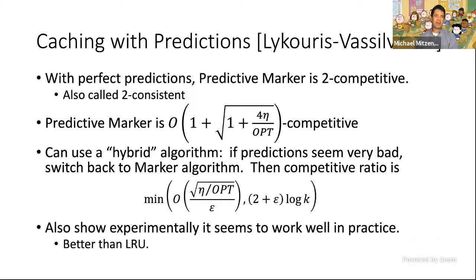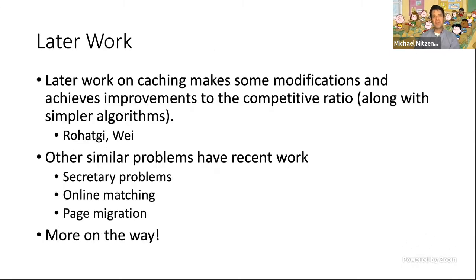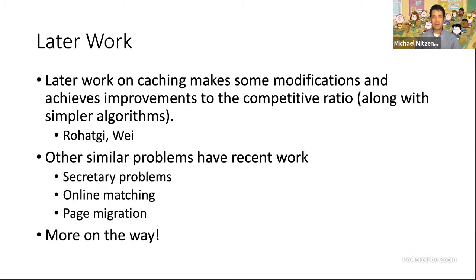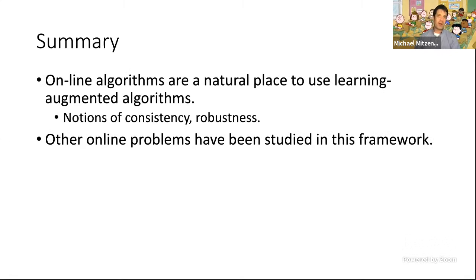Since then, there's been continued work on caching with improved competitive ratios and simpler algorithms. In the broader setting of online algorithms, we're seeing more papers covering prediction models — secretary problems, online matching, page migration. More are appearing at AAAI, ICLR, and NeurIPS. Online algorithms are a natural place for learning-augmented algorithms. Formal notions of consistency and robustness help frame goals, and there's still plenty more to do.